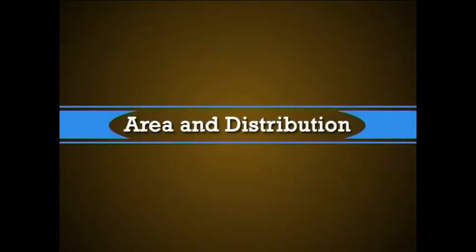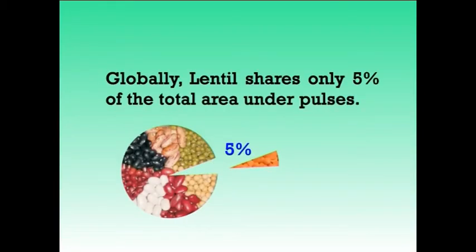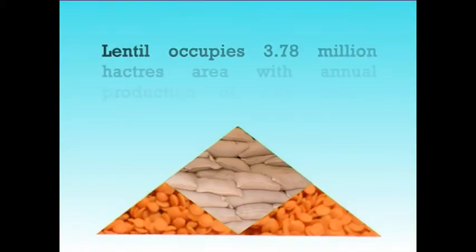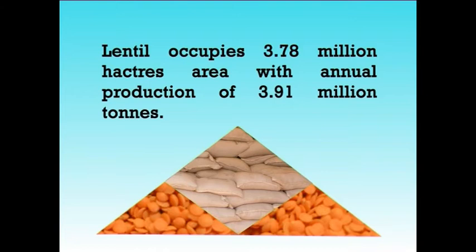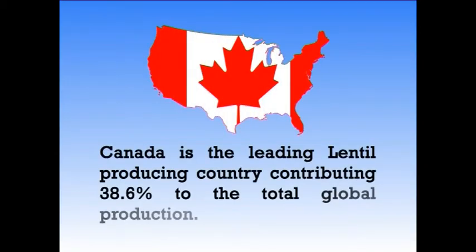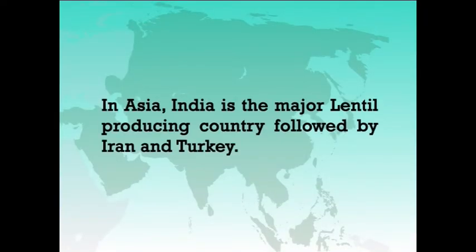Globally, lentil shares only 5% of the total area under pulses. It occupies 3.78 million hectares with an annual production of 3.91 million tonnes. Canada is the leading lentil producing country, contributing about 38.6% to the total global production. In Asia, India is the major lentil producing country, followed by Iran and Turkey.